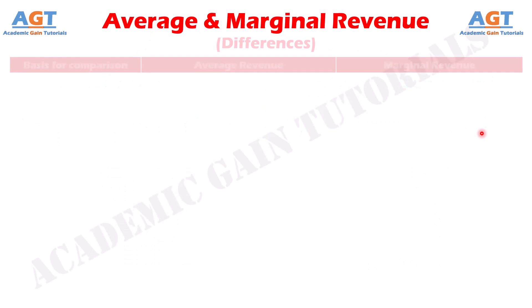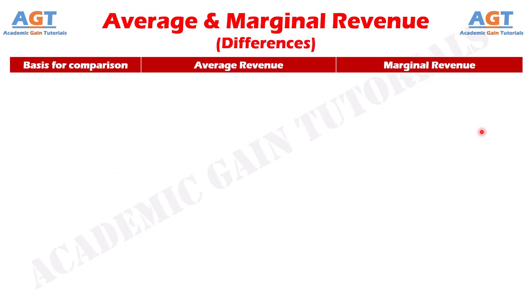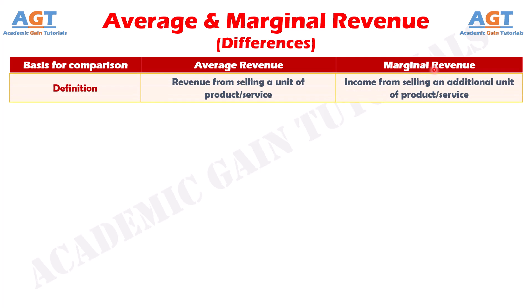Let's look into the basic differences between average revenue and marginal revenue in a tabular form. Difference number one: the average revenue is defined as the revenue that an organization can avail by selling a unit of their product or service, whereas the marginal revenue is defined as the income that an organization can avail by selling an additional unit of their product or service.